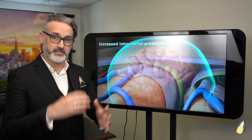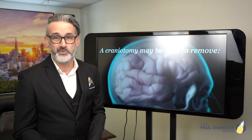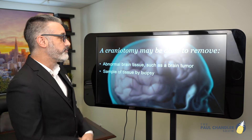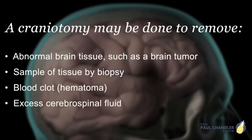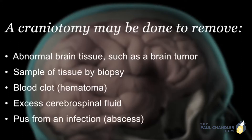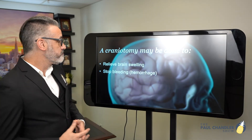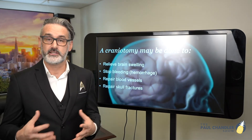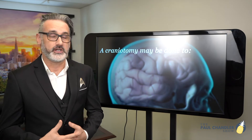When intracranial pressure increases, the brain swells up and starts hitting against the skull, which can result in a brain injury. A craniotomy — a temporary incision — may be done to remove abnormal brain tissue such as a brain tumor, to take a biopsy sample, to remove a blood clot (also known as a hematoma), to remove excess cerebrospinal fluid, or to remove pus from an infection such as an abscess inside the brain or between the skull and the brain. A craniotomy may also be done to relieve brain swelling, stop bleeding (hemorrhage), repair blood vessels, repair skull fractures, and repair any meninges that may have sustained injury.